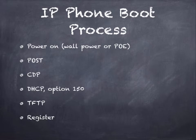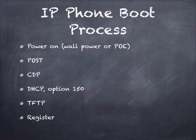The DHCP server must be configured to send Option 150, which is an additional setting beyond the standard IP address, mask, gateway, and DNS information. Option 150 provides the IP address of the TFTP server. The TFTP server is critical because it stores the phone's configuration file — phones do not store their configuration internally. They download it at boot from the TFTP server, learning the server's address from DHCP. The phone then contacts the TFTP server using its own MAC address as the filename to request its configuration file.